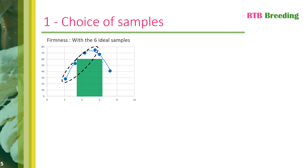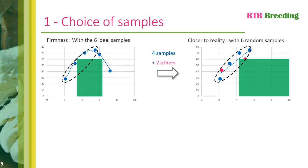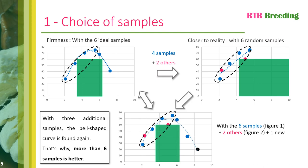Now let's imagine that when choosing the samples to study, we hadn't chosen the six shown in blue, but only the four circles in black and two others chosen at random. By choosing these six new samples — which include the four blue ones and the two new ones in pink — we obtain a curve that is no longer bell-shaped but straight. If we interpret this curve, we could say that the firmer the product, the more consumers appreciate it. If we take the six initial blue samples, the two pink ones and a new one in black, for a total of nine samples, we find the bell curve shape and the correct interpretation of the threshold for firmness.